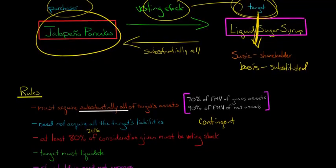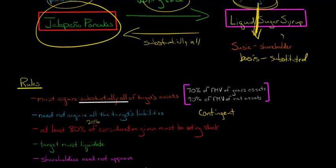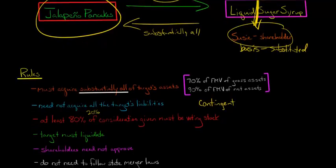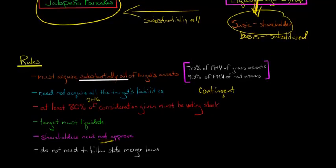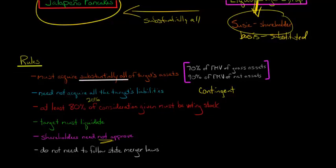Afterwards, as mentioned, the target is going to need to liquidate — basically distributing everything to Susie the shareholder — and there's not going to be any gain recognized except the exception discussed. Another nice thing is that shareholders do not need to approve this. It's not like a Type-A where you had to follow state merger laws. The nice thing about Type-C is that it's a practical merger, but it's not an actual merger, so you don't have to follow state merger laws, although you might be forced to comply with some kind of non-merger state law. That's an advantage to Type-C relative to Type-A.